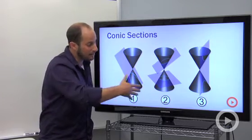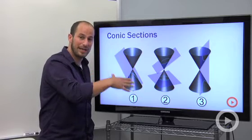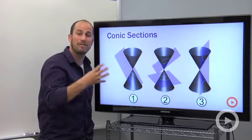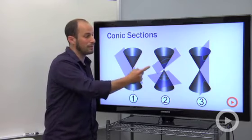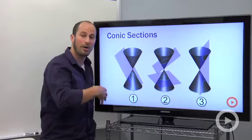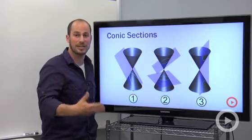So we have these two cones and a plane crossing through them, and we have four possible results: a parabola which you already know, a circle, an ellipse, and a hyperbola. Together all those curves are called conic sections.